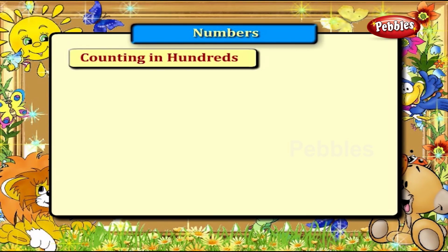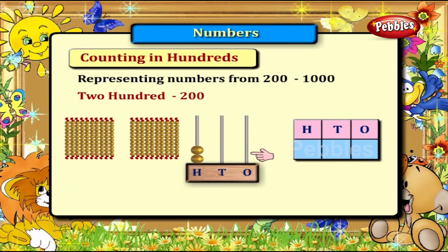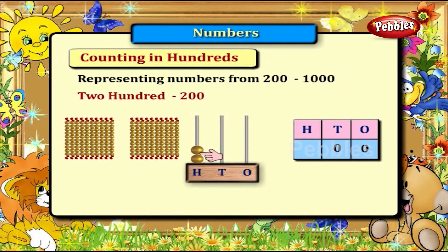Counting in hundreds. Representing numbers from 200 to 1000. Let's start with 200. The number of beads in the ones place is 0, so write 0 in the ones place. The number of beads in the tens place is 0, so write 0 in the tens place. The number of beads in the hundreds place is 2, which represents 200. Write 2 in the hundreds place. We get 200.